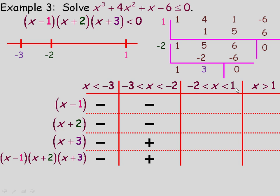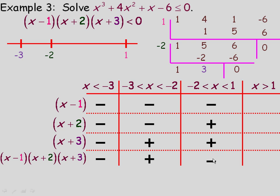For numbers between negative 2 and 1, I'll test 0. Zero minus 1 is negative, so we have a negative there. Zero plus 2 is positive, so that factor is positive now. Zero plus 3 is also positive. We have the product of 1 negative and 2 positives, which is of course negative — another sign change.